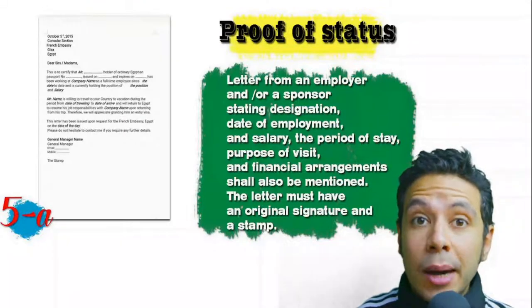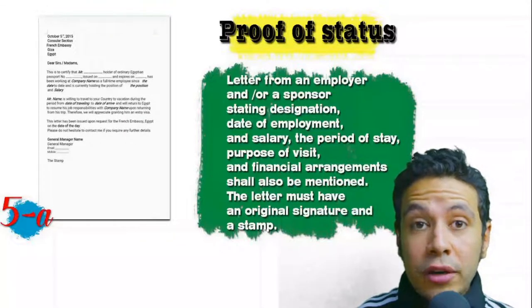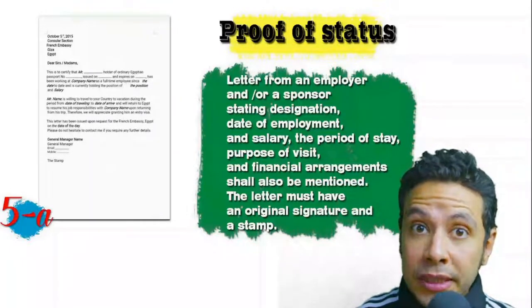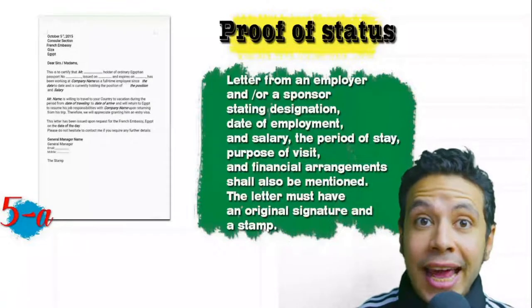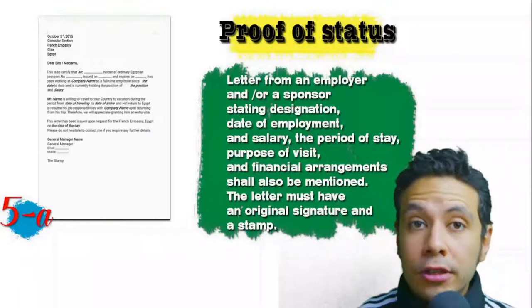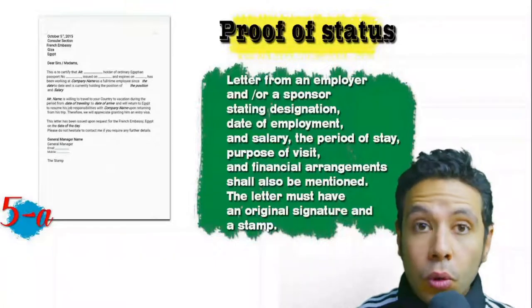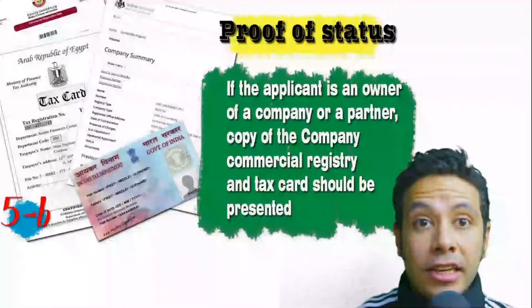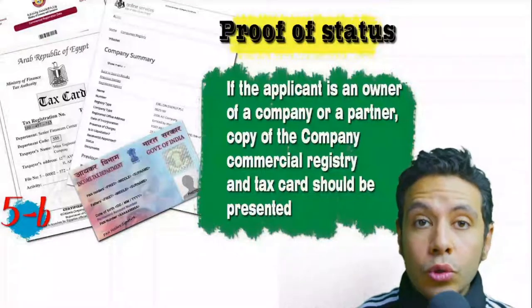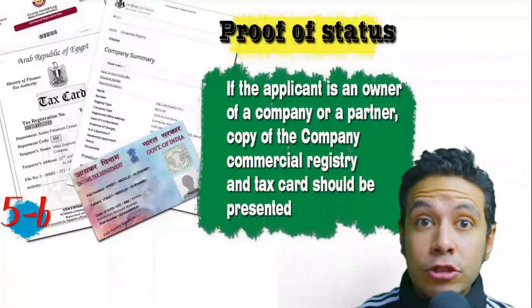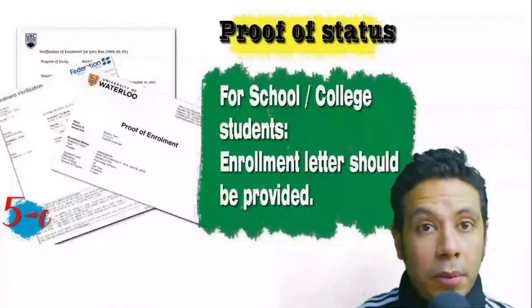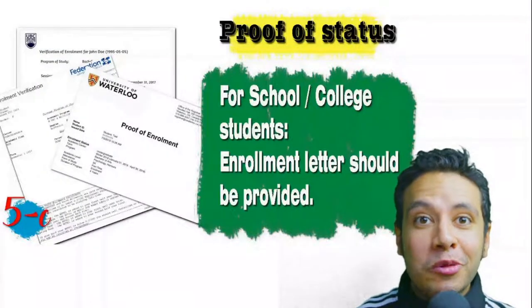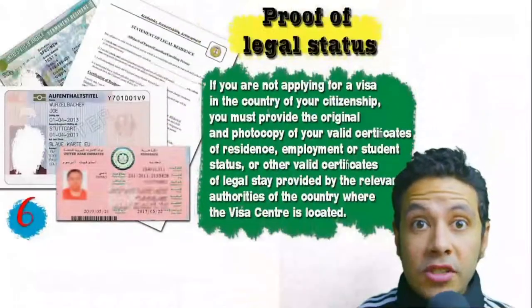In most visa application processes you will need to provide a proof of status. If you are an employee, provide a letter from your employer or HR department mentioning your name, work details, salary, address, and contact numbers — all letters must have an original signature and stamp. If you own a business, your commercial registry and tax card must be presented. If you are a student, an enrollment letter from your university or school should be provided.